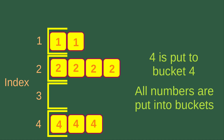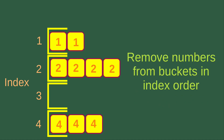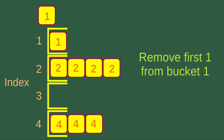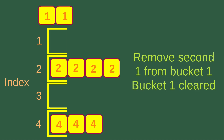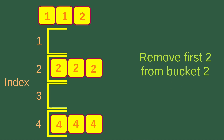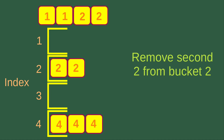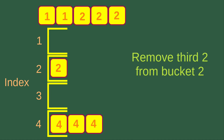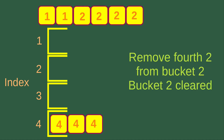We can go to another step of the pigeonhole sort. This step involves removing the numbers from the buckets in index order. I remove the first one from bucket one, then remove the second one from bucket one — bucket one is now cleared. Then I go to index two bucket and remove the first two, the second two, the third two, and the final two. Bucket two is now also cleared.